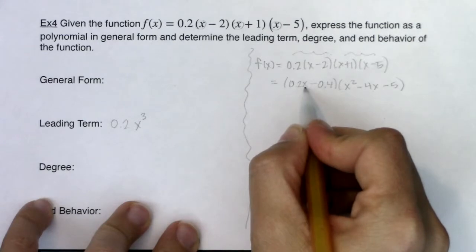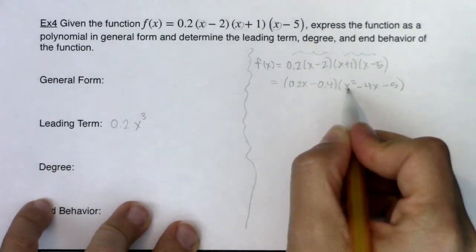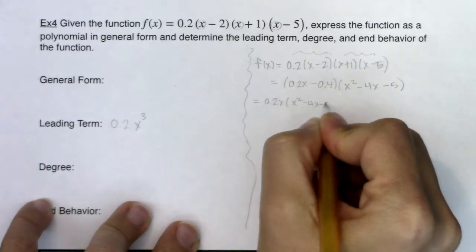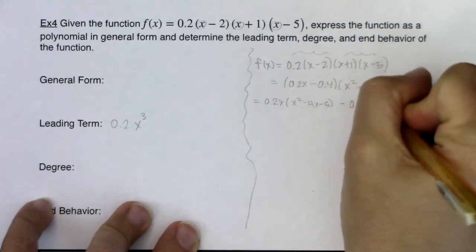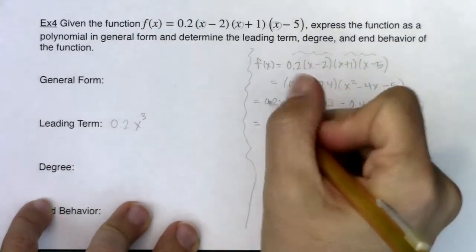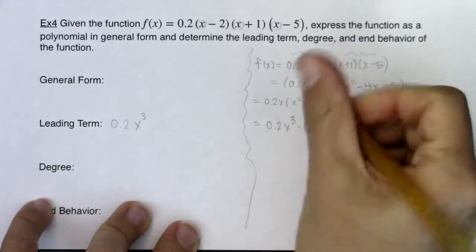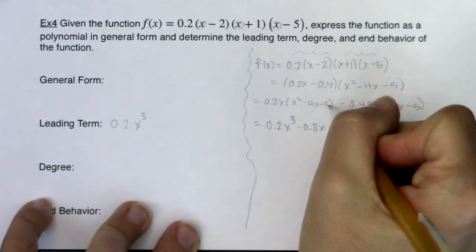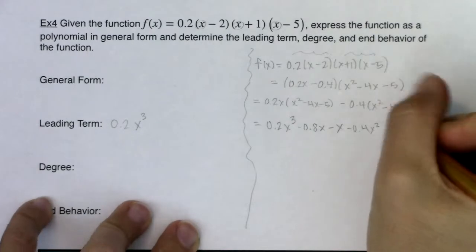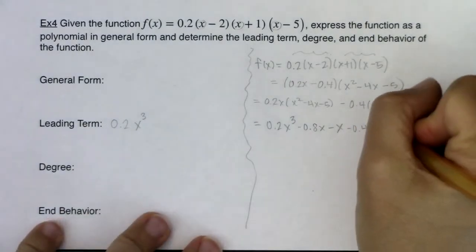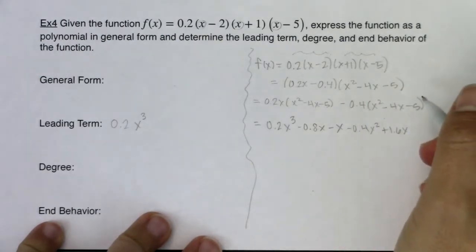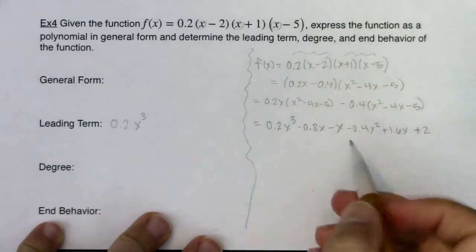Now I have a binomial getting multiplied to a trinomial and I'm going to distribute. I need 0.2x multiplied to x squared, minus 4x, and minus 5, and then negative 0.4 multiplied to the same trinomial. So: 0.2x cubed, 0.2 times negative 4 is negative 0.8x squared, 0.2 times negative 5 is negative x. Then minus 0.4x squared, plus 1.6x, and negative 0.4 times negative 5 is plus 2.